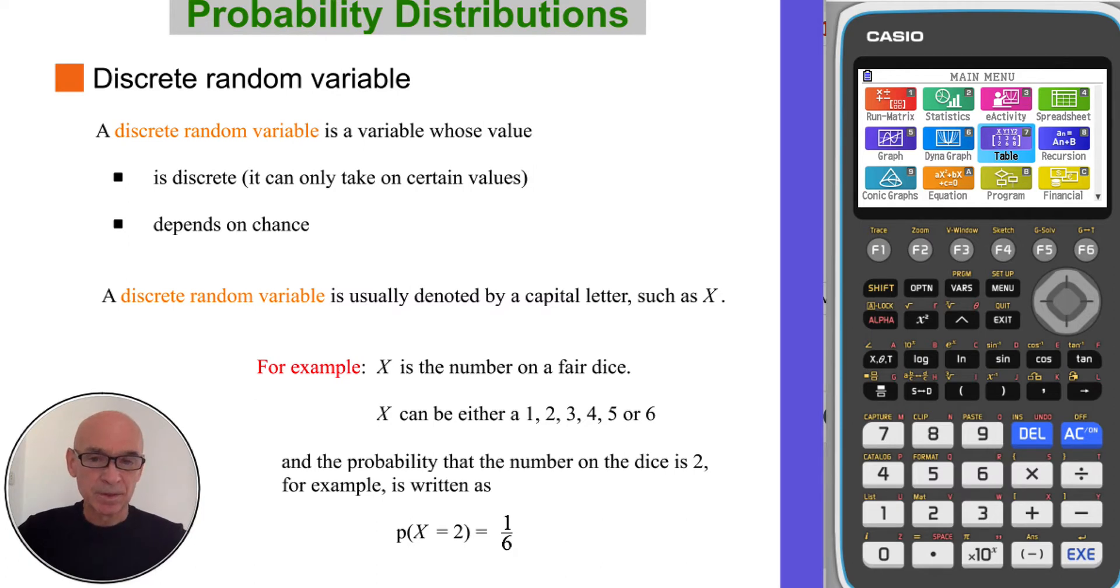Discrete random variable is usually denoted with a capital letter, for example X. For example, if X is the number on a fair dice, X can either take on the values 1 to 6 and the probability that number, for example, is a 2, is written as P(X = 2) as shown at the bottom.